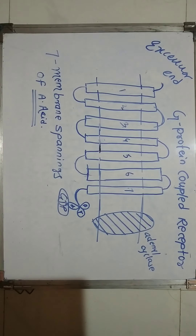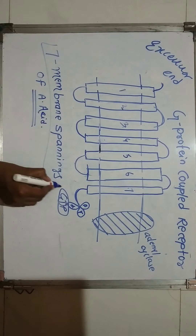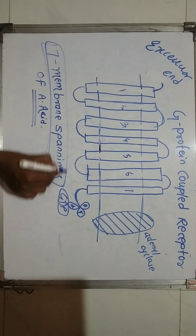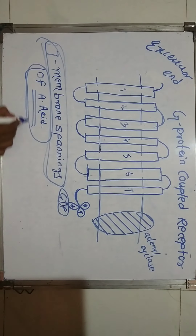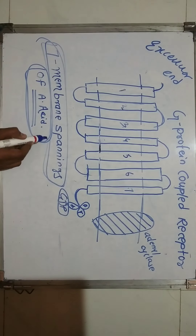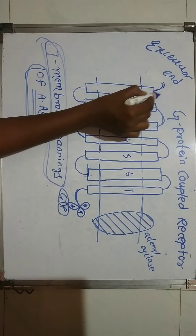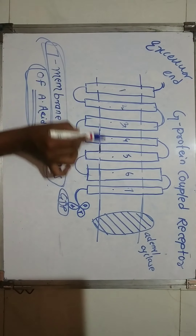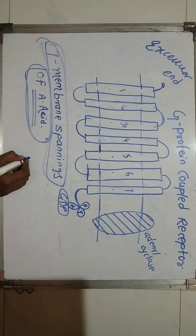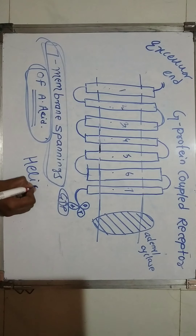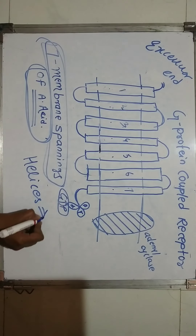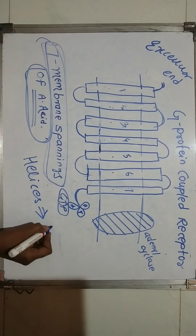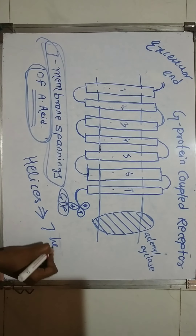The G-protein coupled receptor is nothing but a seven membrane-spanning receptor. It is made up of seven membrane spannings of a hydrophobic amino acid, which forms spannings into the cell membrane. These seven spannings you can also call helices. So we can say that the G-protein coupled receptor is made up of seven helices.